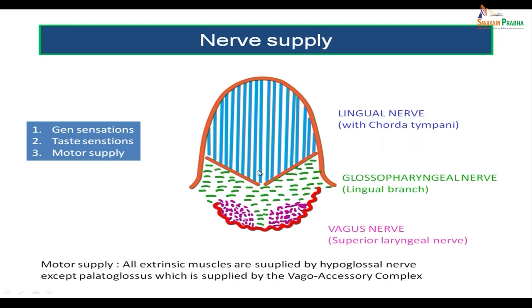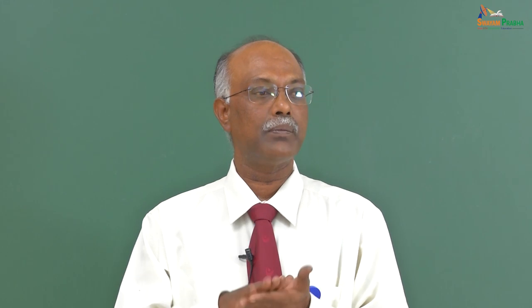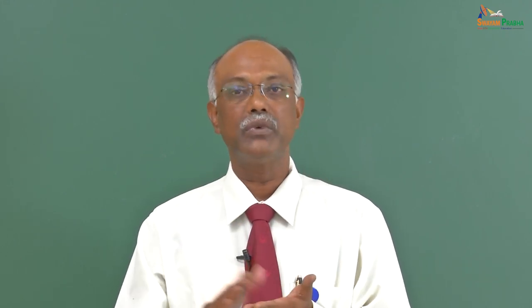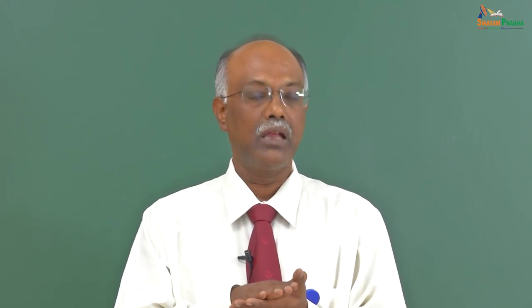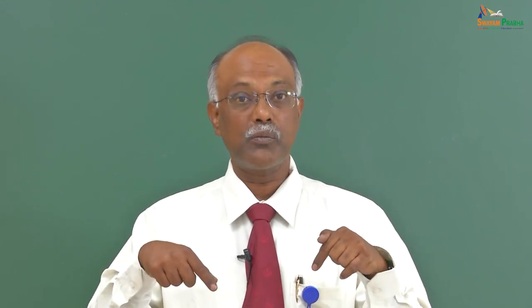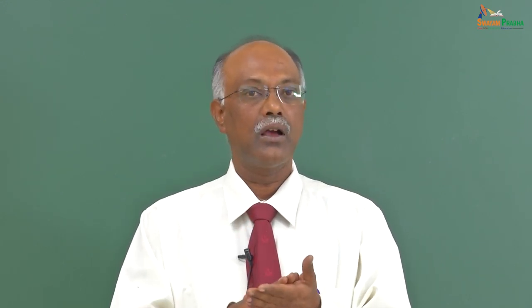To summarize: anterior two-thirds general sensations are carried by the lingual nerve; anterior two-thirds taste sensations are carried by the chorda tympani branch of the facial nerve running with the lingual nerve. The posterior one-third — both general sensations and taste — are carried by the glossopharyngeal nerve. The posterior-most part — both general sensations and taste — are carried by the superior laryngeal branch of the vagus nerve.